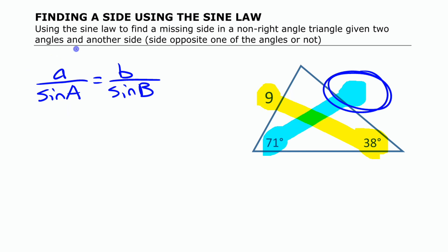So if I say that 9 over sine of 38 degrees—what's highlighted in yellow over there—is the same as my missing side, which I'm going to call b here, divided by sine of 71.